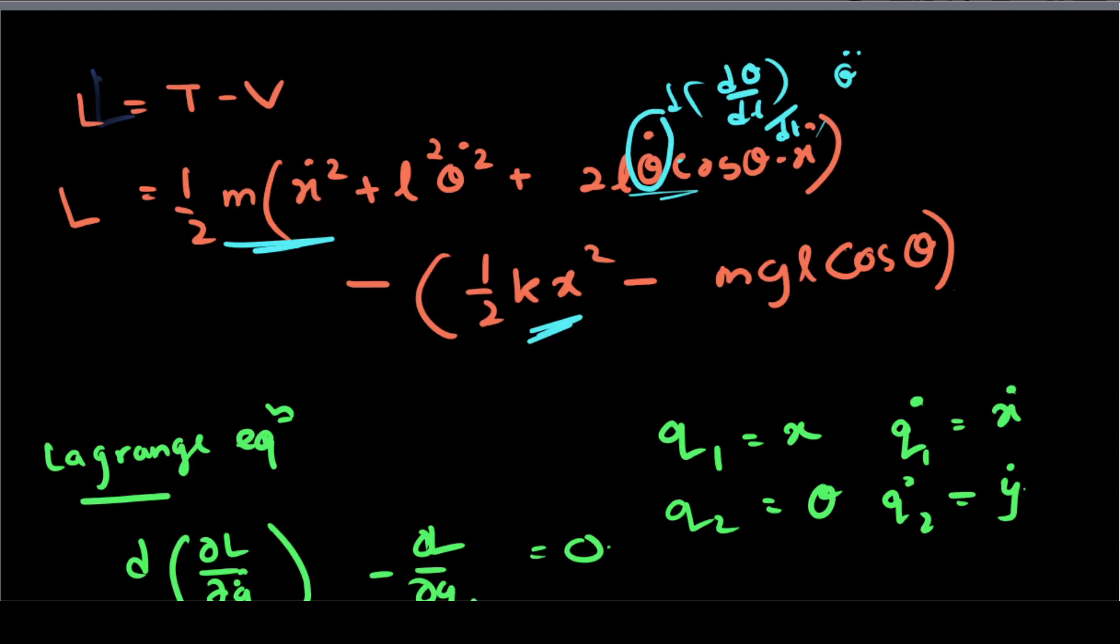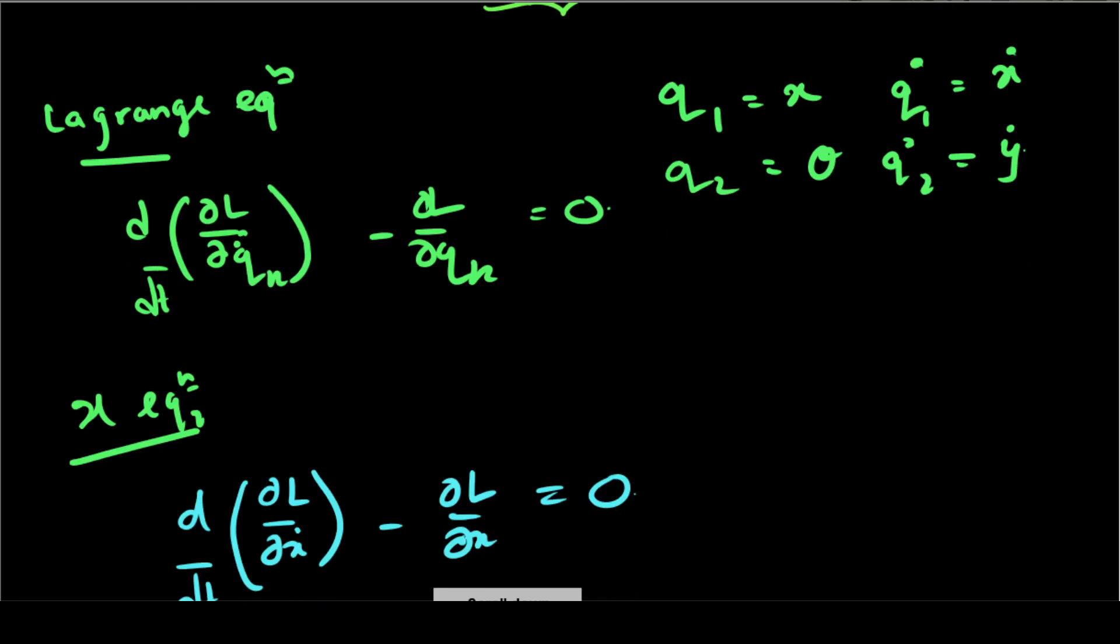I will define the Lagrangian as kinetic energy minus potential energy. My control is in the Lagrangian. I am going to define the general coordinates in the Lagrangian. If we define the Lagrangian equation, d/dt of partial L over partial q dot k minus partial L over partial q k equals zero.